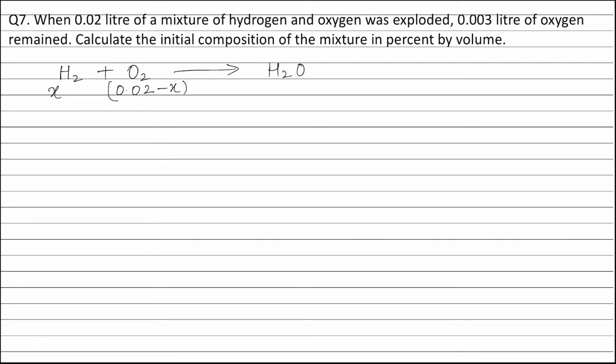Now, after the reaction 0.003 litre of oxygen was left. Therefore, x litre of hydrogen reacted with 0.02 minus x minus 0.003 litres of oxygen.